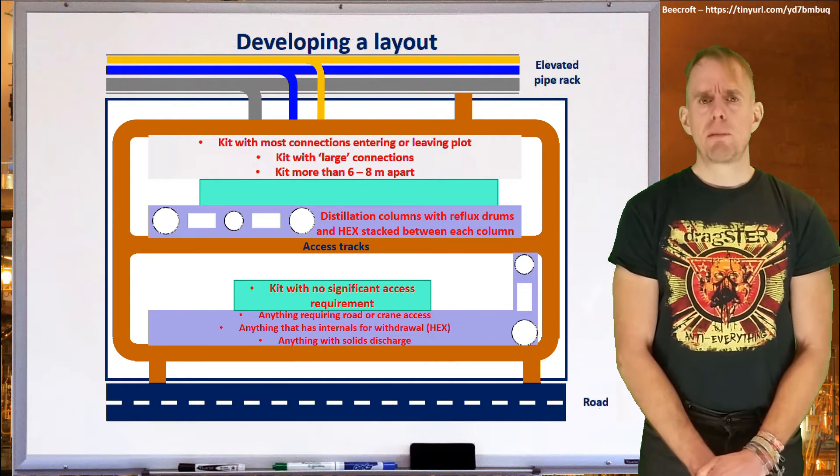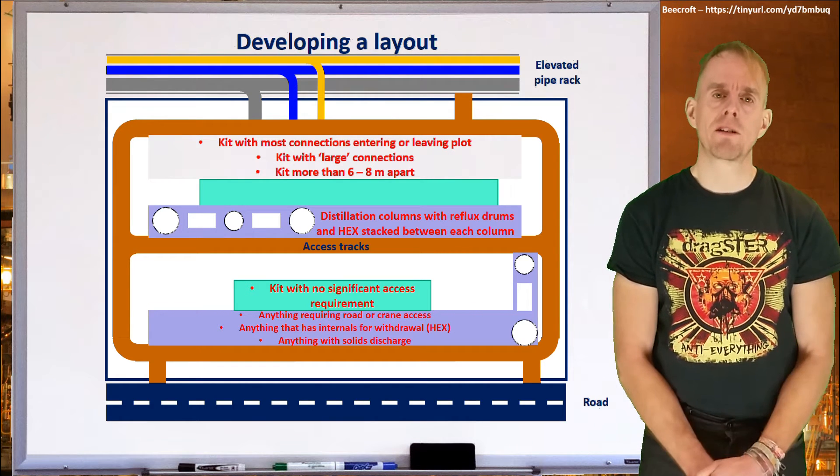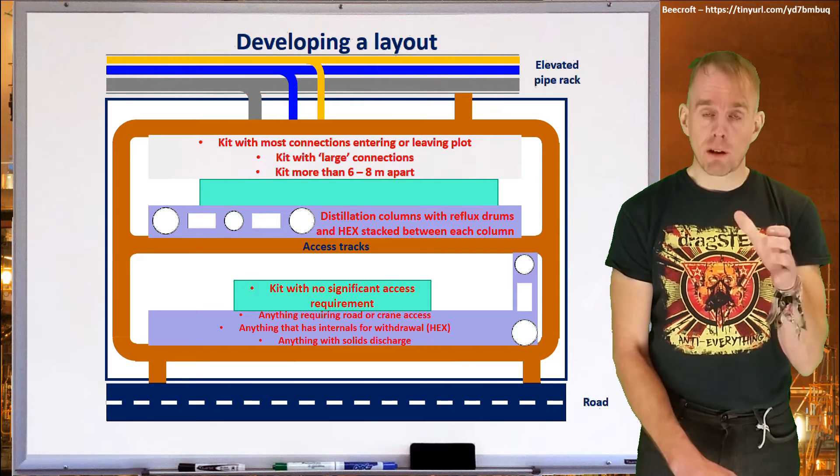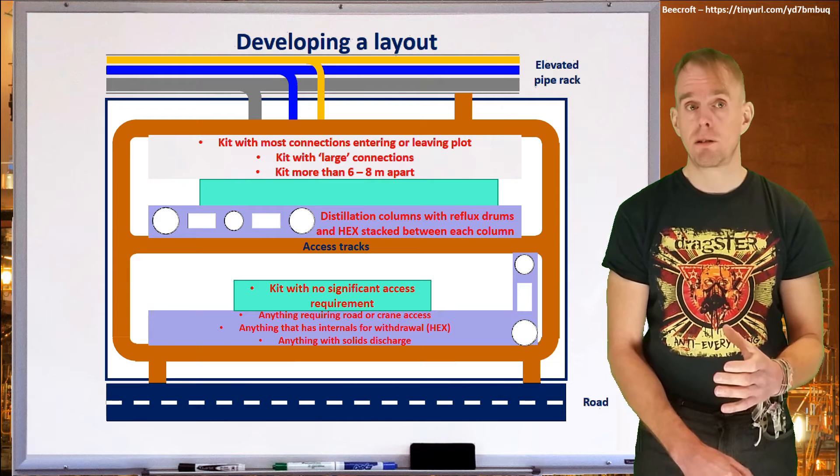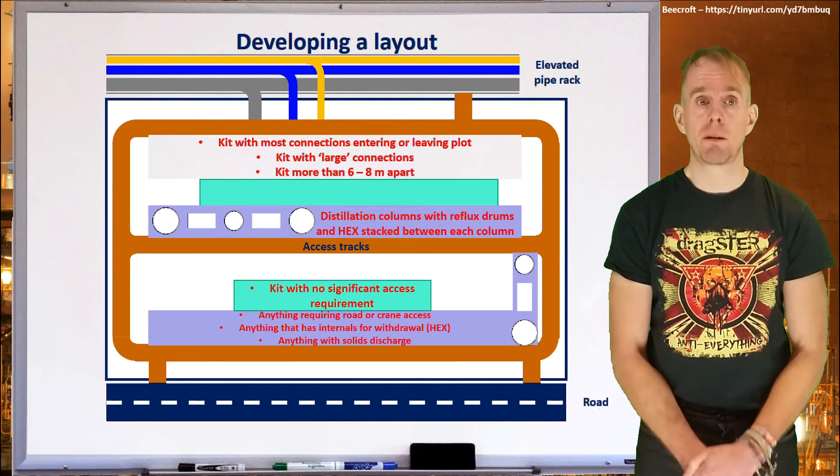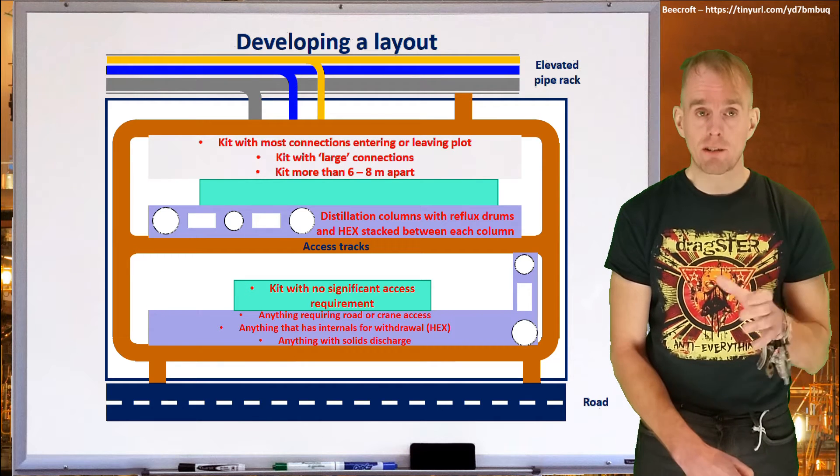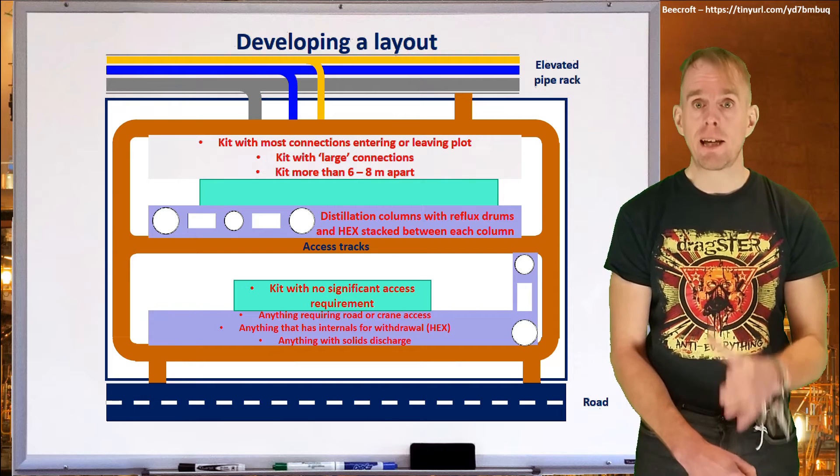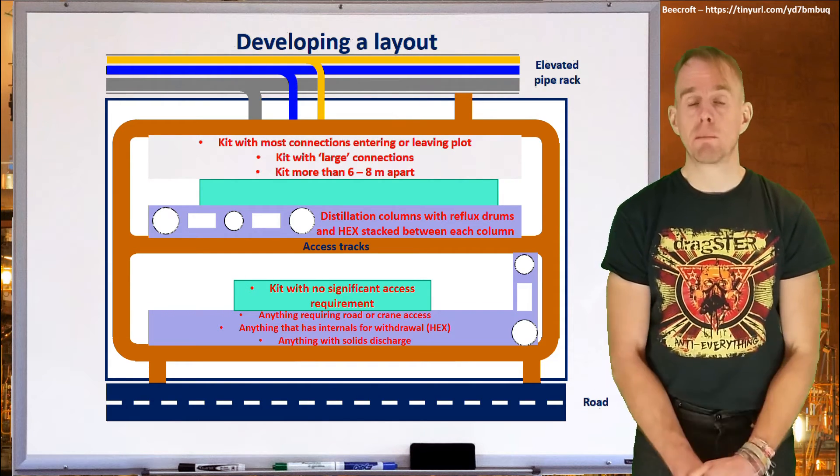Next, think about big tall things, distillation columns, for example. We saw in the concluding part of the last part of this lecture a slide that showed you a big column being craned into place. Keep that image in your mind because when you're building the plot, you need to be able to sufficiently access the sites that you're going to put these items of equipment on. And you need to be able to get a crane in there, and that crane needs to be able to lift properly these items of equipment into place.